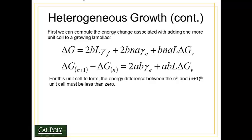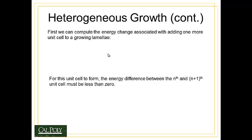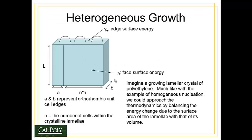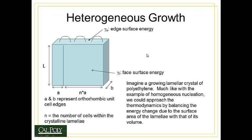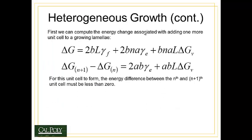First, we compute the energy change associated with adding one more unit cell to a growing lamellae. It's 2BL times the gamma of the face energy. That's the area of this face times the face surface energy, plus 2B·NA·γE, the surface area of the two edges times the edge surface energy, plus the volume of the lamellae, B·A·L·N unit cells, times the change in free energy ΔGv.